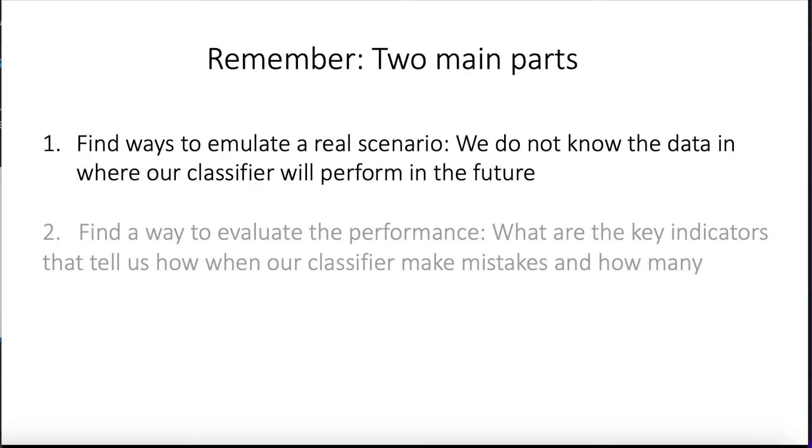And after we do that, the second stage is going to be to come up with some key indicators that tell us how well the classifier is performing on that unseen data. So we are still in the first part. Previously, we saw the holdout methods, and now we are moving forward with this.